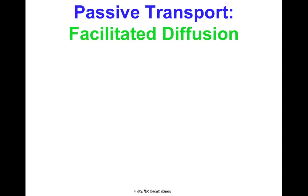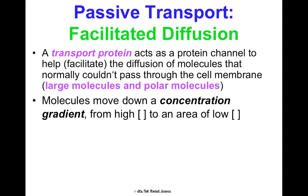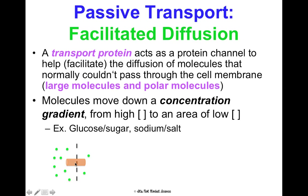Facilitated diffusion is slightly different. We're looking at a transport protein that acts as a protein channel to help facilitate the diffusion of molecules that normally can't pass through — large molecules and polar molecules. We're still going down the gradient, still going high to low, we just need a little extra support. It doesn't require extra energy; it just uses a protein channel. An example is glucose, which is a large molecule that goes through a transport protein, and sodium, which is a polar molecule.